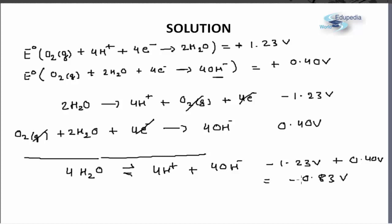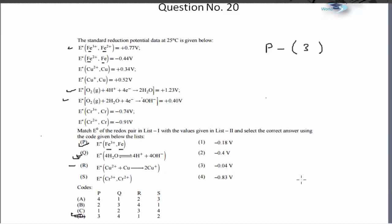Taking this back to the options, Q matches with option number 4: −0.83 volt. Again it matches with option D. Now we will check out options R and S.